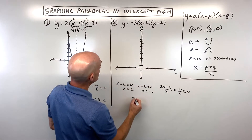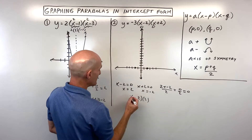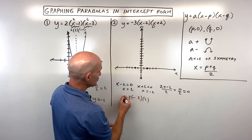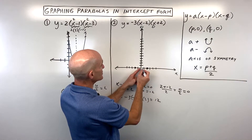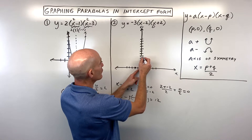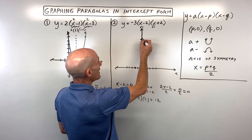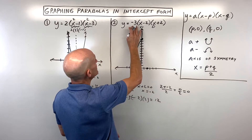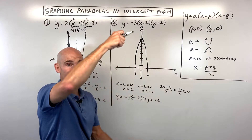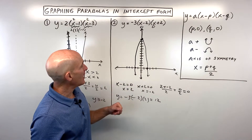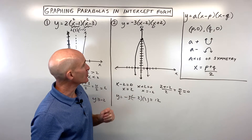Plugging in zero: zero minus two is negative two, zero plus two is two, times negative three. That gives negative two times two is negative four, times negative three... actually negative two times two is negative four, times negative three comes out to twelve. So the vertex y-coordinate is twelve. The graph opens down because a is negative, and it's narrow due to the factor of three — a vertical stretch by three.